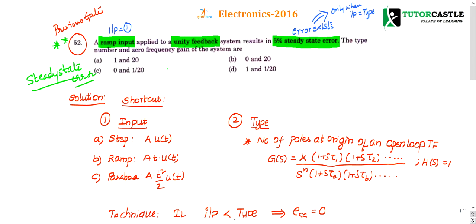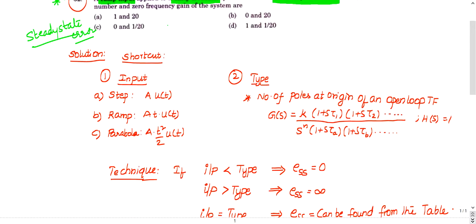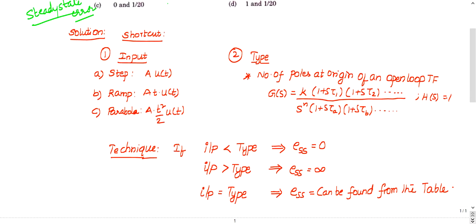I want to explain the concepts of steady state error and then go to the question using some shortcut techniques. You need to remember a few things. First, consider the various inputs: a control system can receive a step input, ramp input, or parabolic input — these are the standard inputs generally used in steady state error analysis.